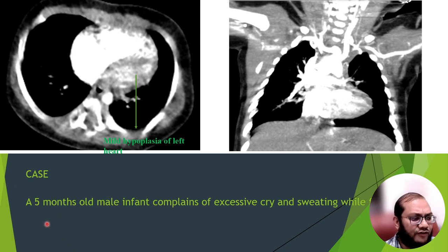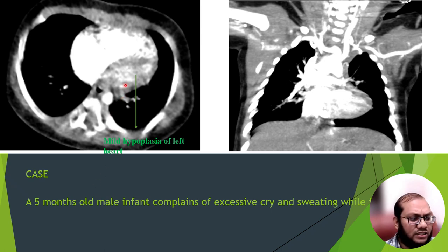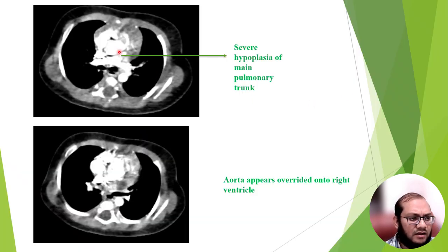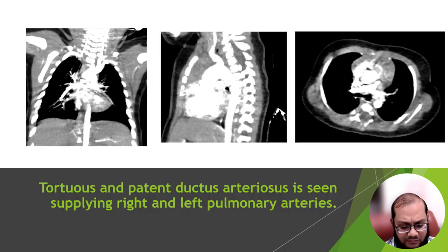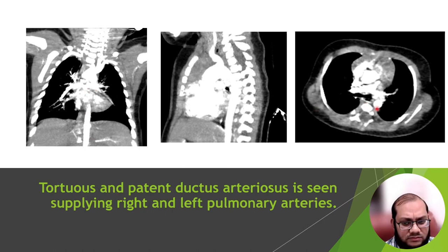In this case, a 5-month-old male infant presented with complaints of excessive crying and sweating while feeding. On the axial CT images, we can see the left side of the heart is hypoplastic, and the pulmonary trunk is also severely hypoplastic. The ductus arteriosus here is patent and it supplies both the left and the right pulmonary arteries.